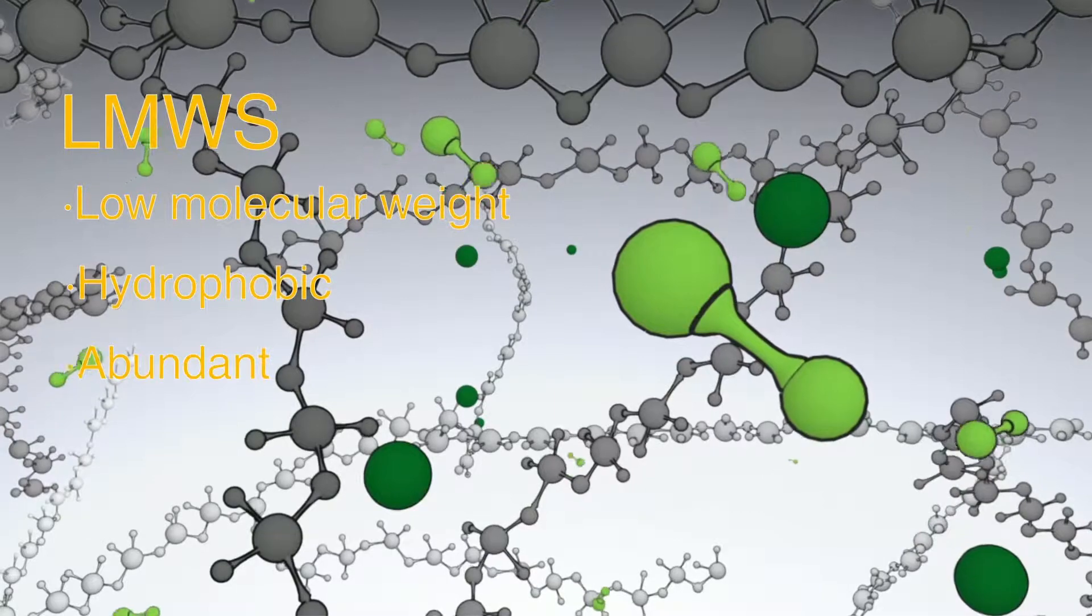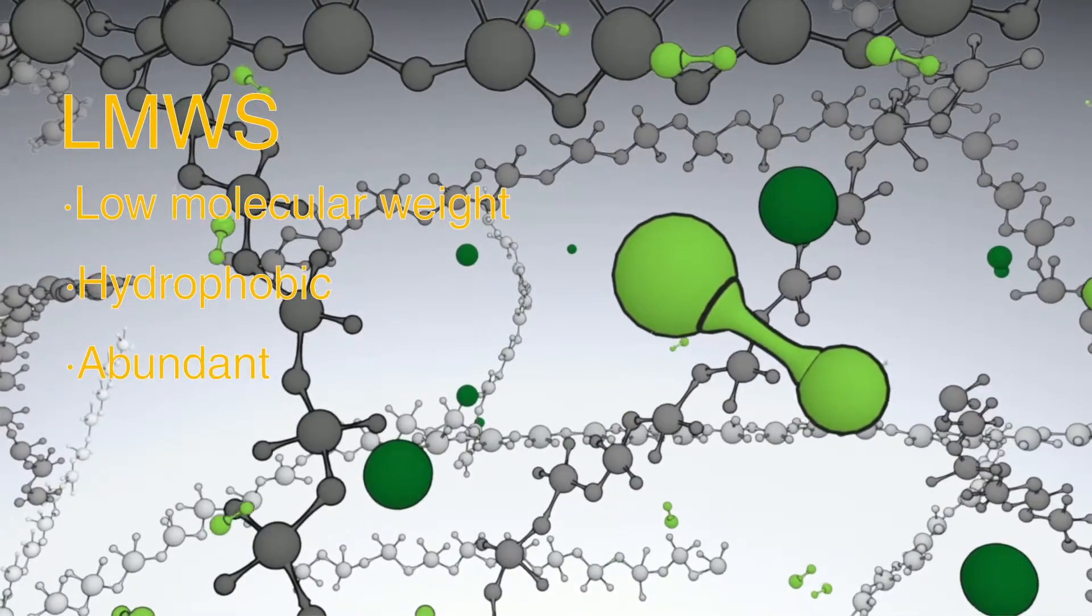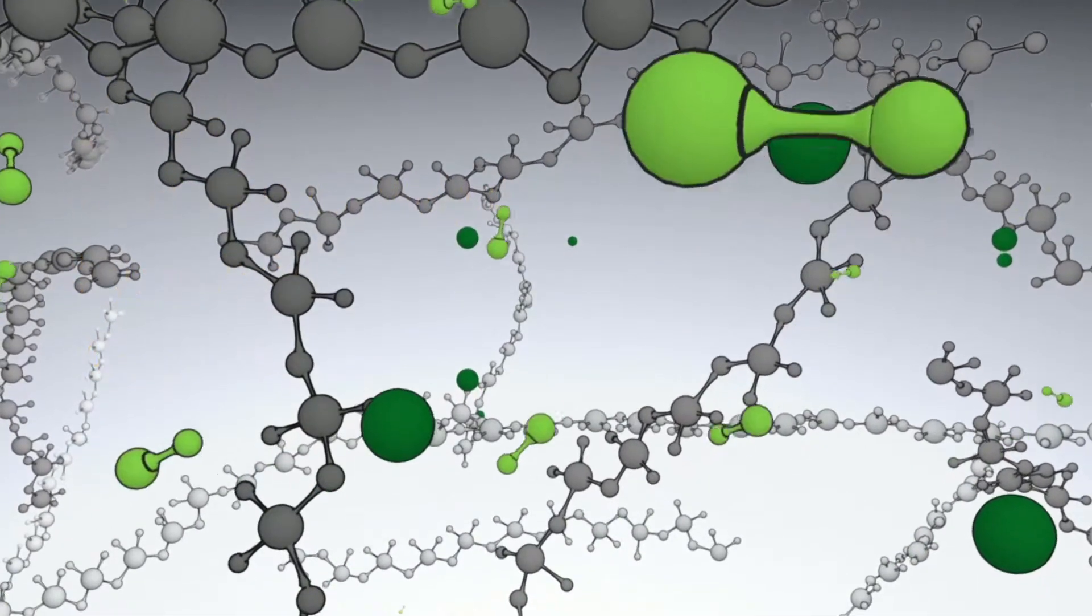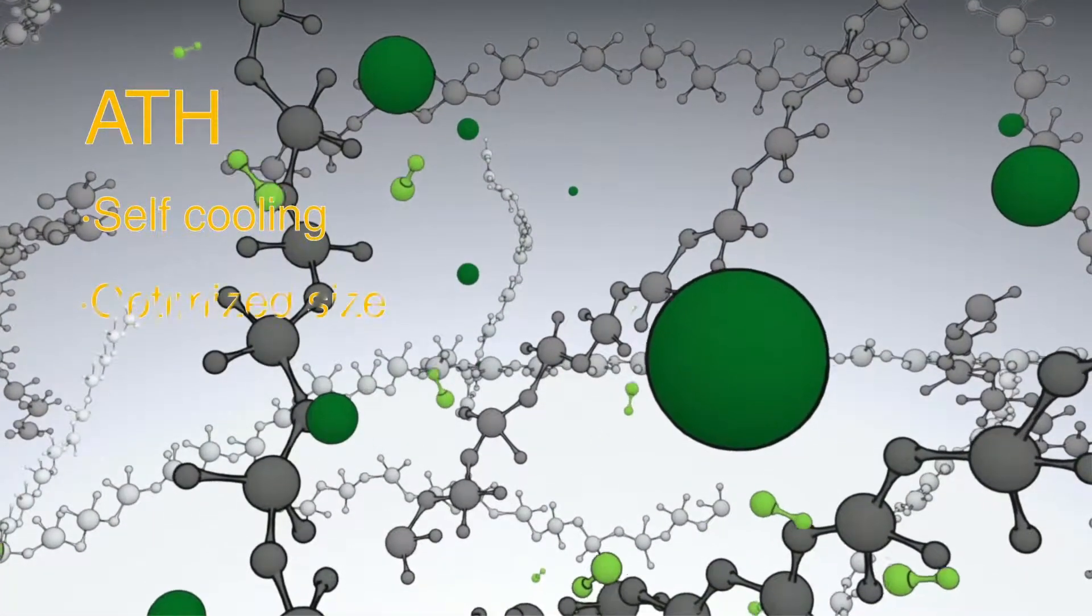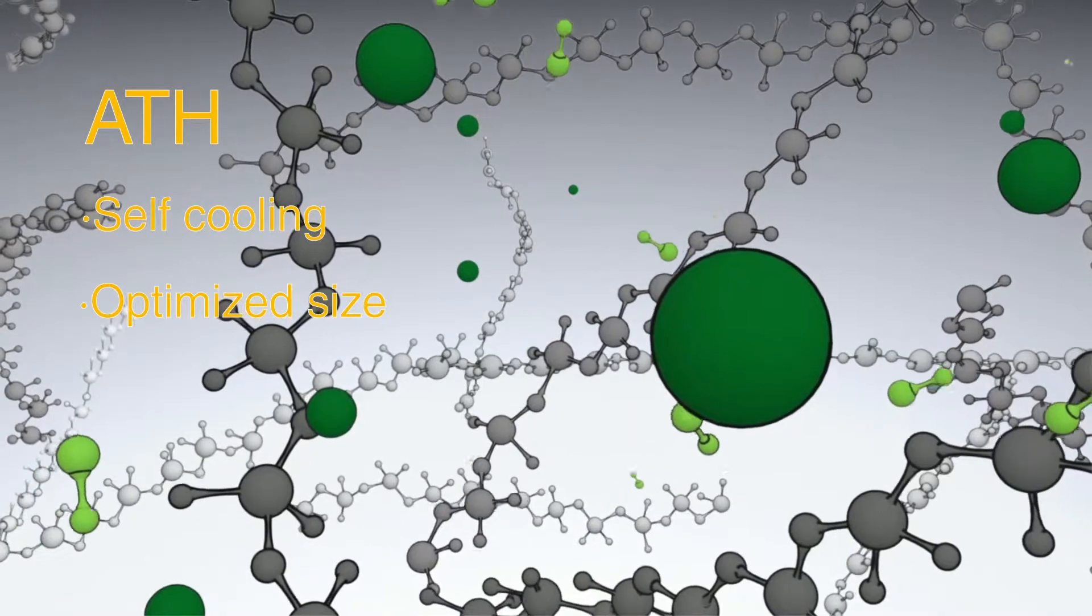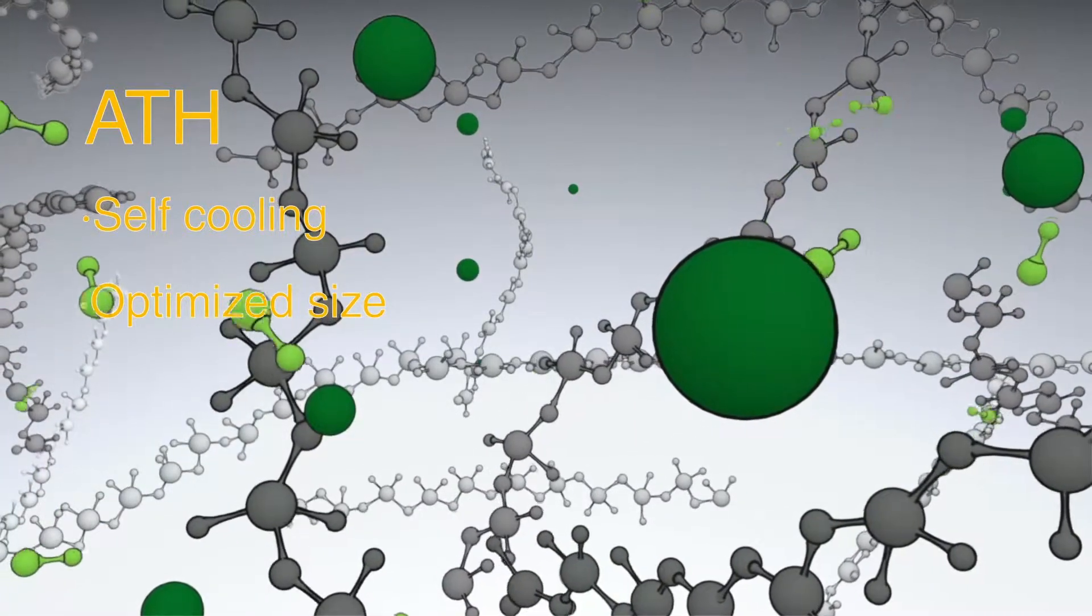Any high quality silicone for high voltage service should contain ATH. The optimized ATH in SiCoat maximizes protective benefits while minimizing blockage of LMWS flow.